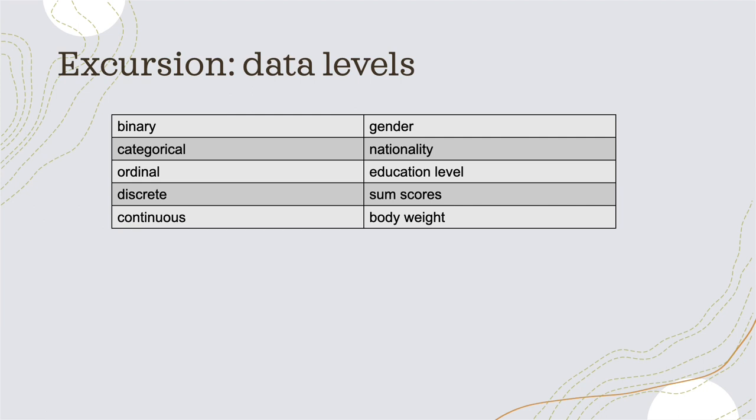For example, low, middle, high income — the order of the categories has a certain meaning. The next data level is discrete data, which can be, for example, some scores from questionnaires. Discrete means we are talking about whole numbers.